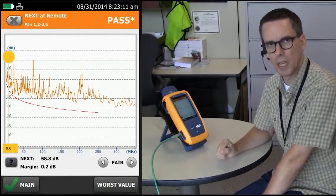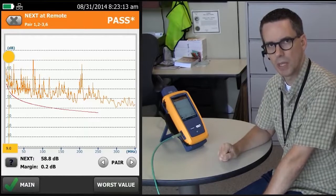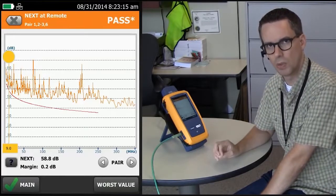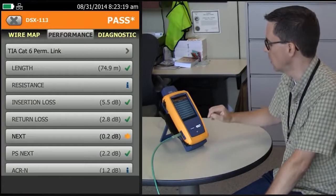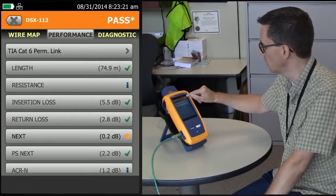Wouldn't it be nice if we could look down the cable and see where the crosstalk is happening? And that's exactly what you can do with the DSX cable analyzer. If I go back to this screen here and tap on the diagnostic,